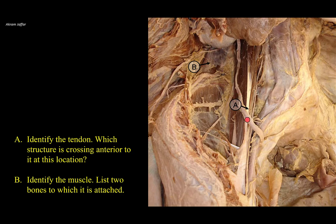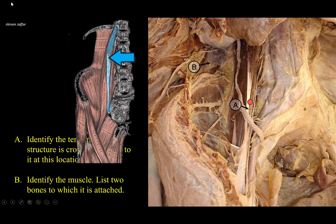Identify the tendon, which structure is crossing anterior to it at this location, and then identify the muscle and list two bones to which it is attached. On the side of the spine is the psoas major muscle, and anterior to it there is a long tendon of another muscle. You can see the belly of the muscle here — it's short and small. The muscle is slender and is a variable muscle, not present in all people. It's present in two out of three individuals and is called the psoas minor muscle.